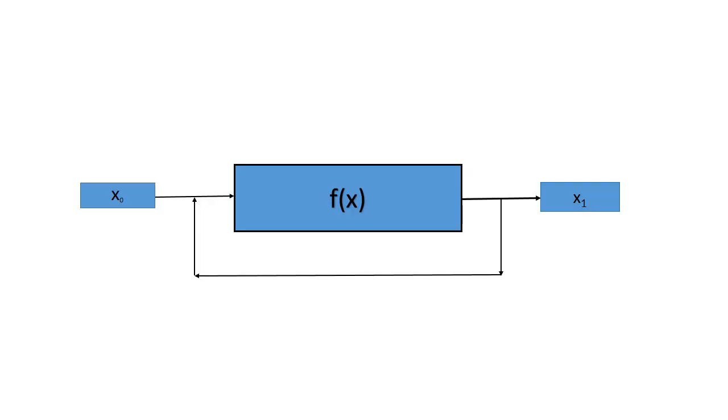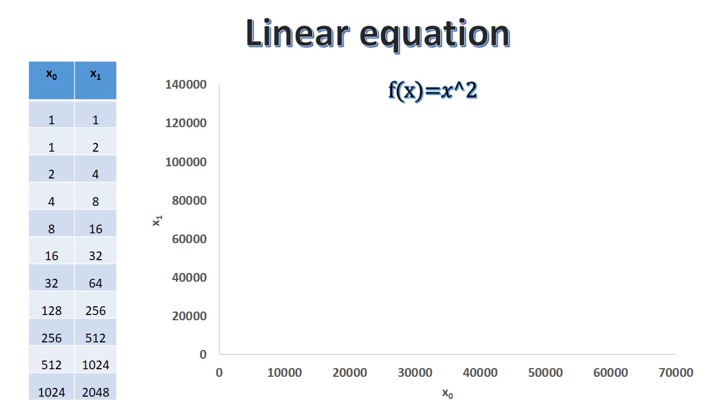The next important property of chaos is nonlinearity. Let us understand this property with an example. Assume a function f(x) which takes x₀ as the input and outputs the value x₁. Then x₁ is given as the feedback to the function f(x). Now let us first consider the example of a simple linear equation.